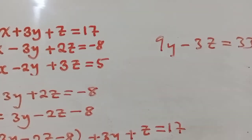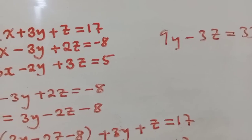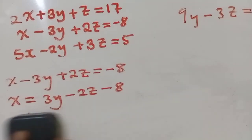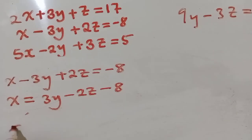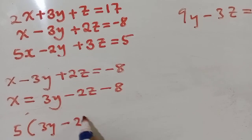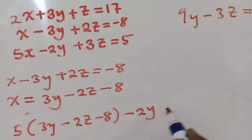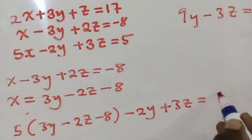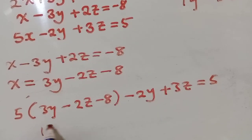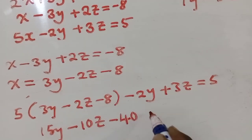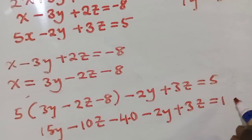Now almost the same thing we did to the first equation, we are going to do to the next equation. So we have 5 times open bracket 3y minus 2z minus 8, close bracket, minus 2y plus 3z equals 5. We distribute: 15y minus 10z minus 40 minus 2y plus 3z equals 5.